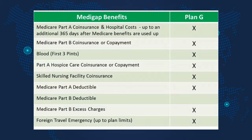It pays Medicare Part A coinsurance and hospital costs, Medicare Part B coinsurance or co-payments, the first three pints of blood if you need a transfusion, Part A hospice care coinsurance or co-pay, skilled nursing facility coinsurance or co-pay, Medicare Part A deductible, Medicare Part B excess charges, and foreign travel medical emergencies up to certain limits.